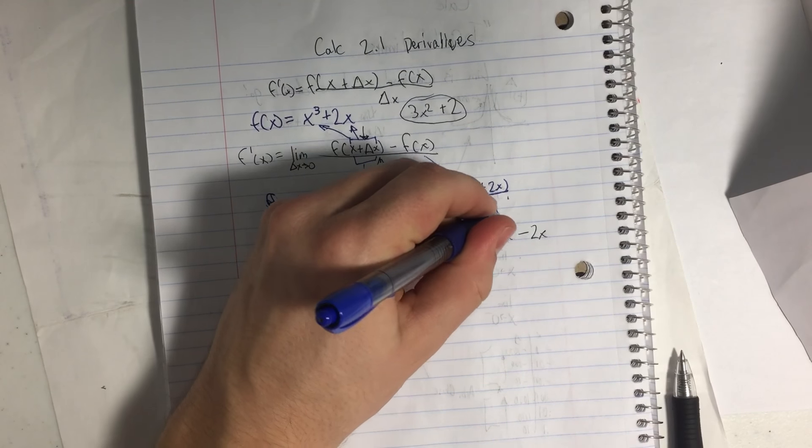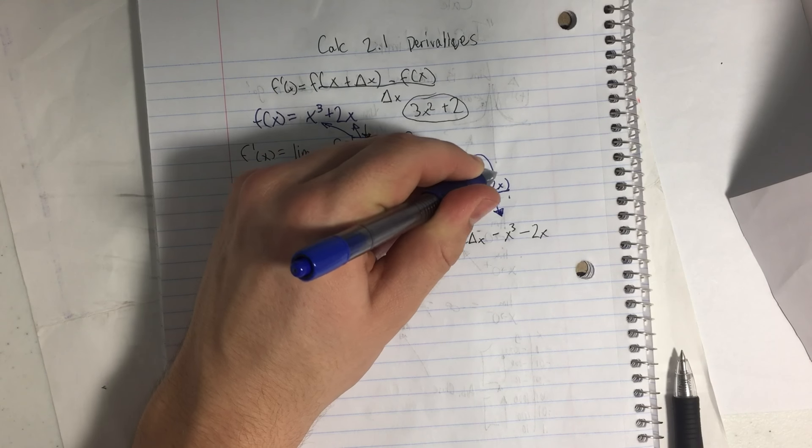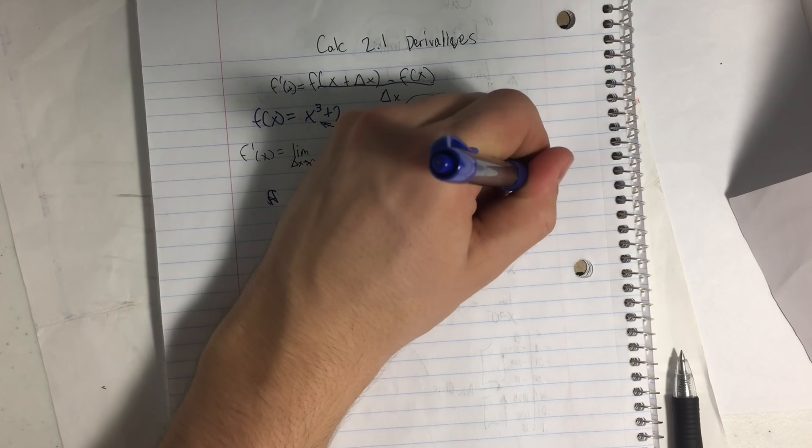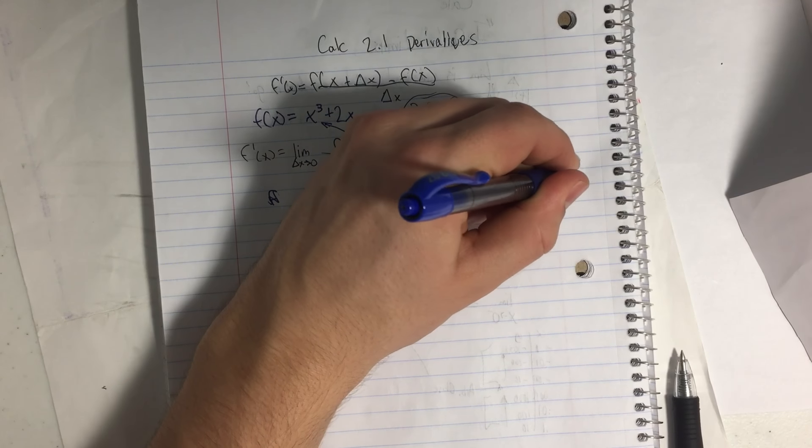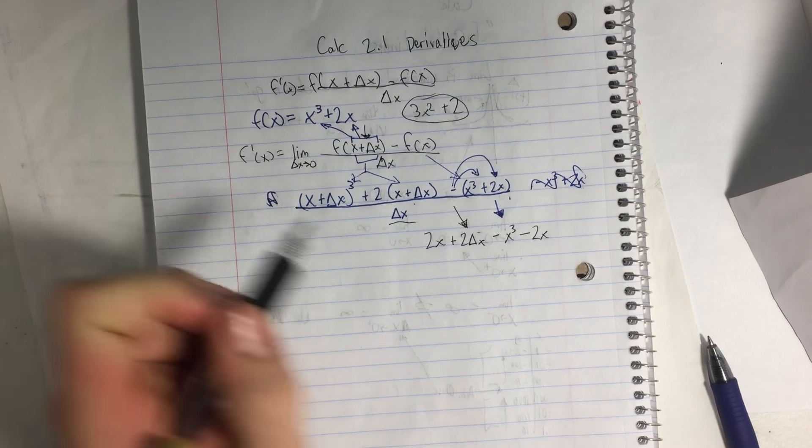Okay, so I have 2x + 2Δx - x³ - 2x. A place for mistakes is right here. That's where you can forget to distribute this negative one to both units. Don't get negative x³ + 2x. That's wrong. It's like that.